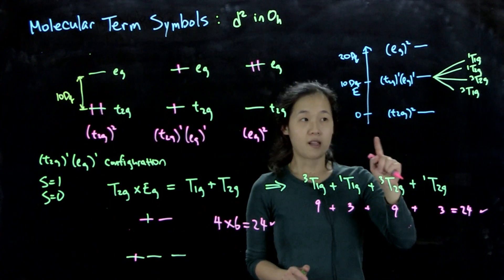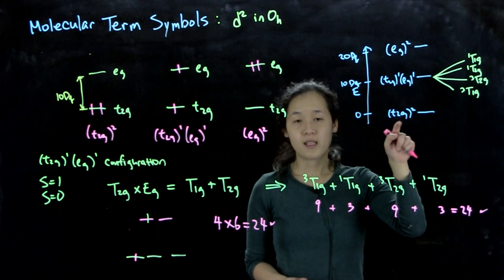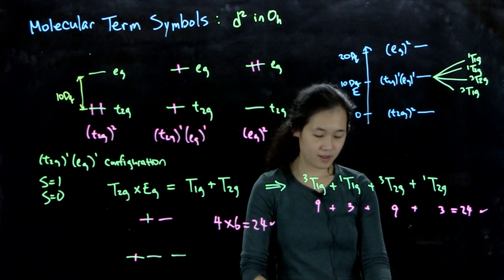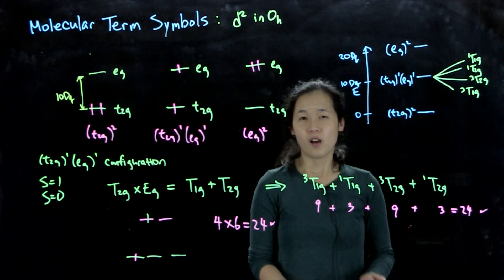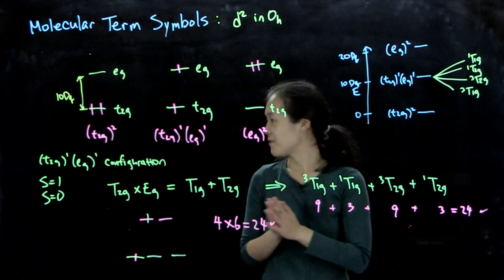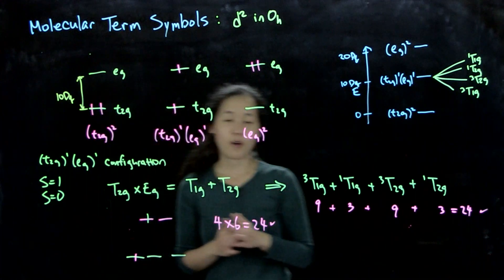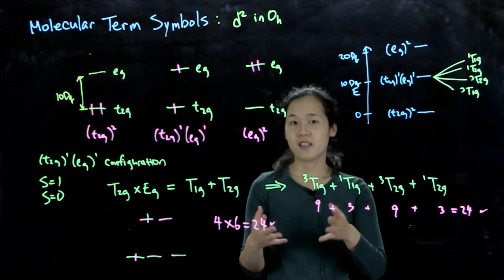So this is how you approach this problem for t2g¹, eg¹. But it's going to get a little bit more complicated when we have the two electrons in the same orbital. So I'll actually get to that in the next video because we're going to have to use this approach called descent in symmetry.